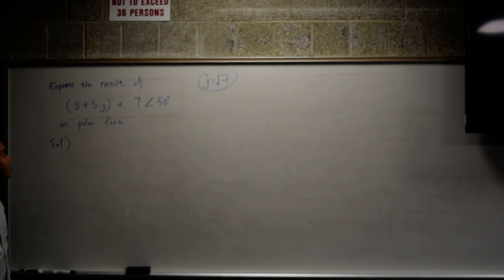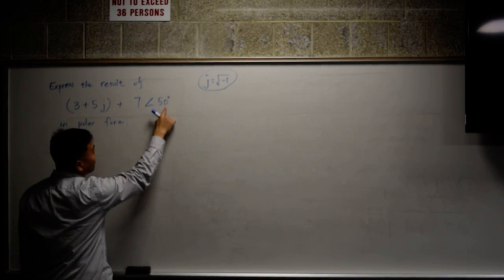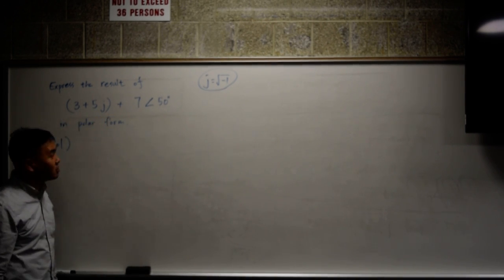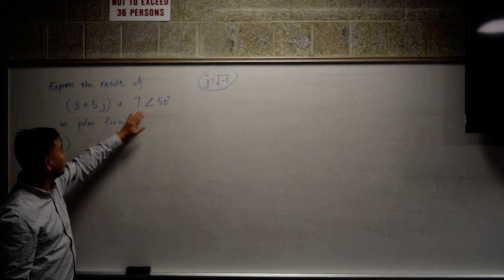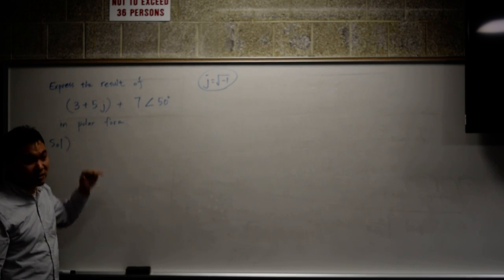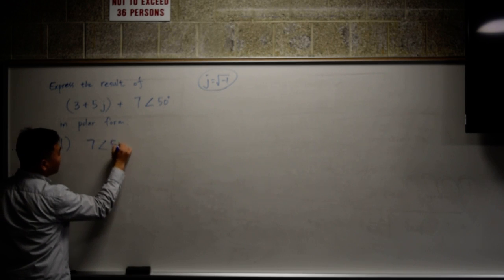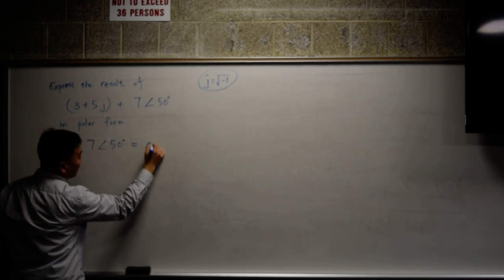First, you have to convert 7 angle 50 into a rectangular form like this because if you don't, then you don't know what the components are, therefore you can't add.